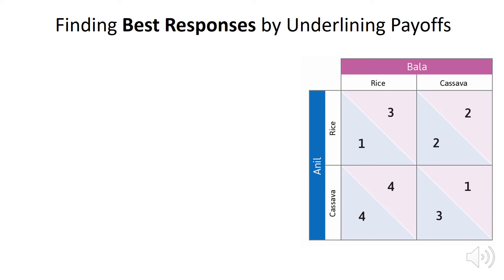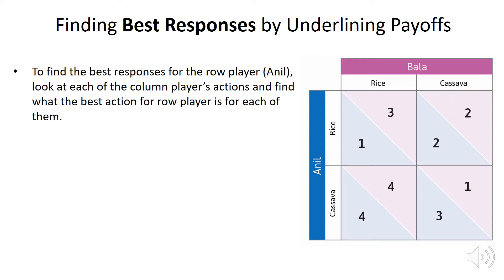In this video, I want to show you how to solve simple 2x2 games like the one we have here by finding the best responses of each of the players to the actions taken by the other player. This is a method we can use to solve any simultaneous 2x2 game. What we're going to do is consider each player in turn.